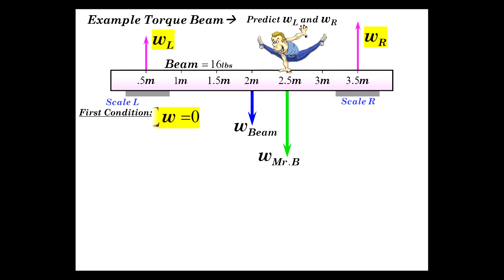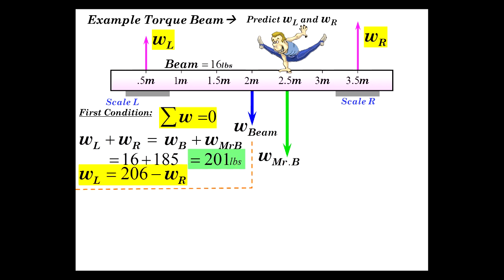Well, the first condition for equilibrium, sum of the weights must be equal to zero. There's no translational acceleration. So scale readings, the up, left and right, have got to be the forces down, which is the beam and me. And so let's go ahead and put some numbers in that we know. The beam is 16. I'm 185. He's somewhere around there, hopefully. So that gives us 201. Therefore, we can say that the left reading is 206 minus the reading on the right.